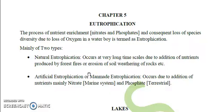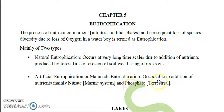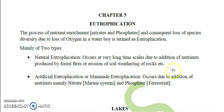Artificial eutrophication occurs due to addition of nutrients, especially nitrate and phosphate. Nitrate is generally the limiting nutrient in marine environments, so eutrophication primarily occurs in marine water due to nitrate. Phosphate is limiting in terrestrial water, so phosphate plays the major role in eutrophication in terrestrial water bodies.